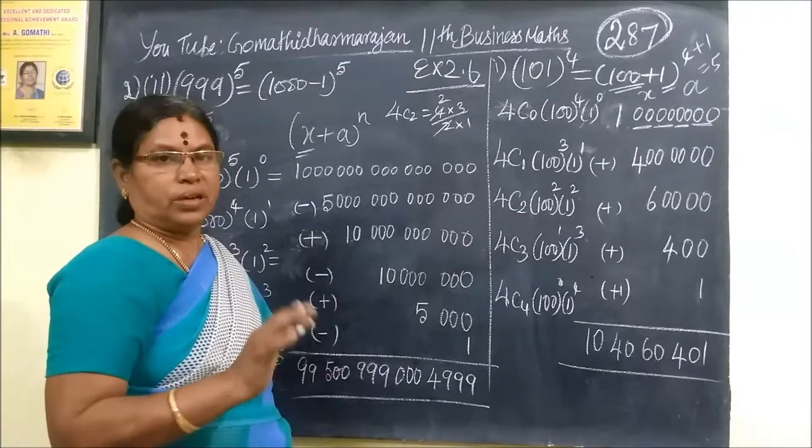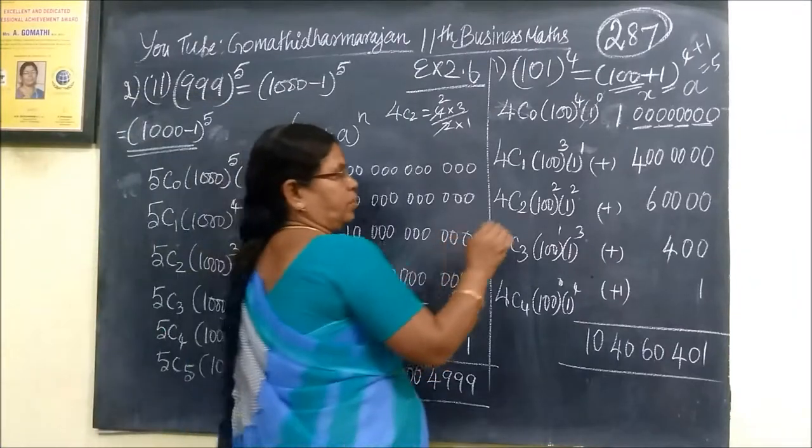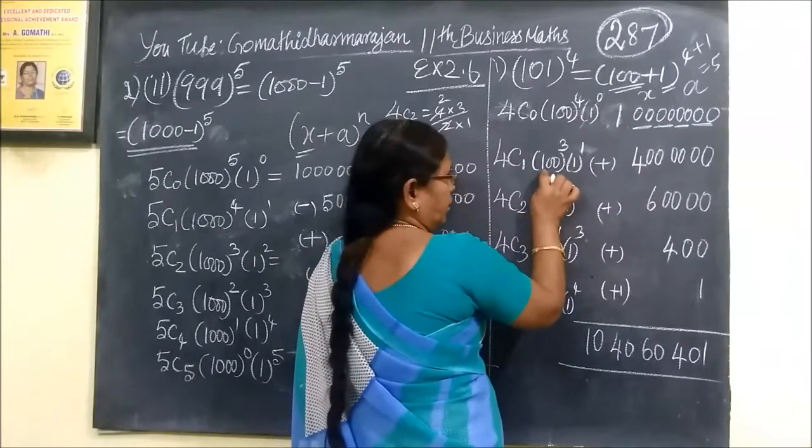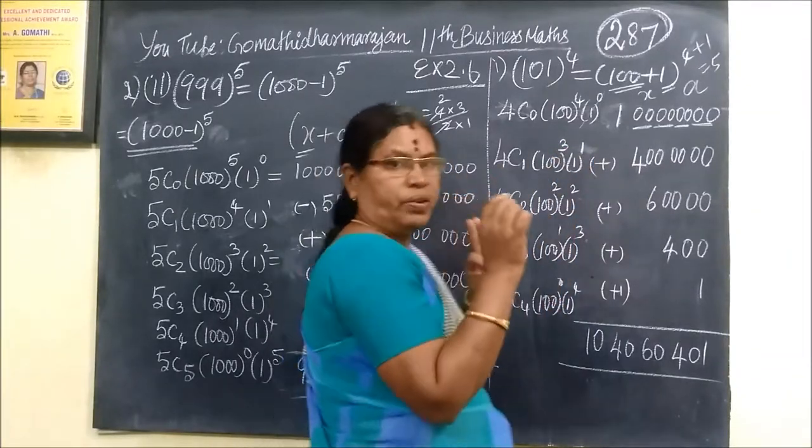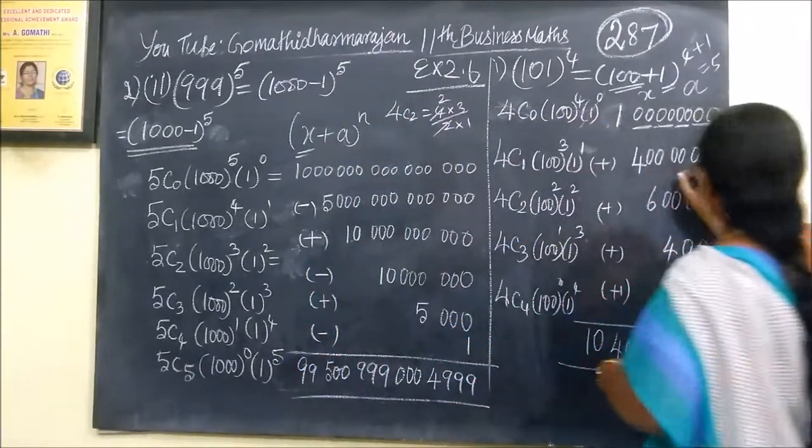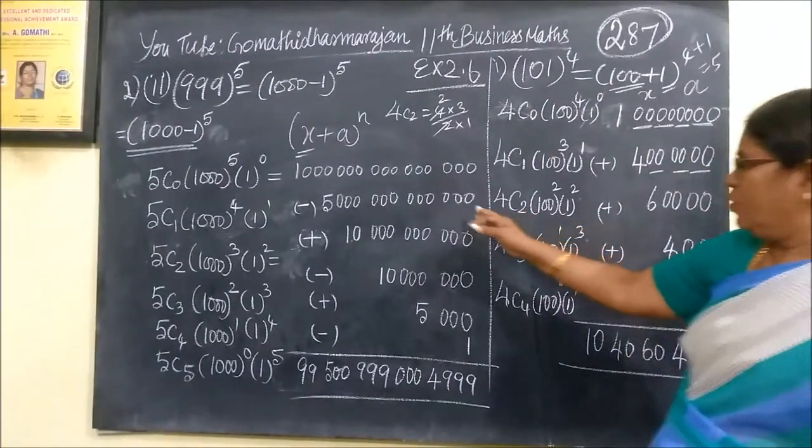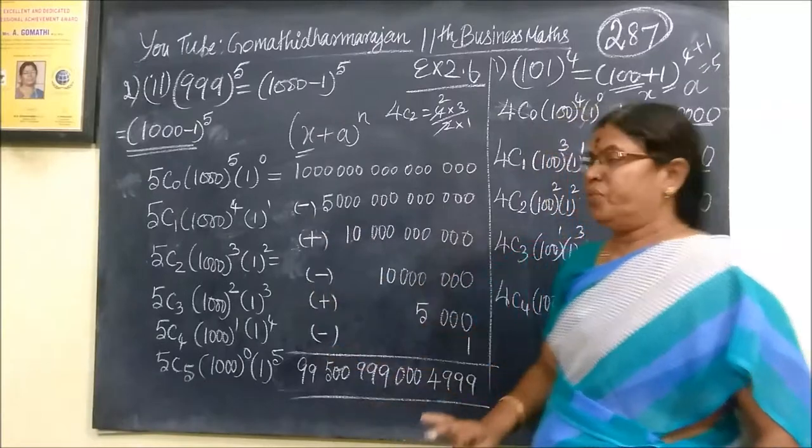The calculation is straightforward. It will be easy if you take your time. 4C1 is 4, 100 to the power 3. Even if you are not able to get it immediately, what you're doing is correct.